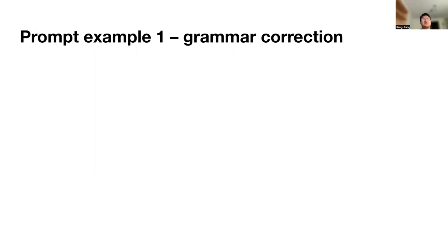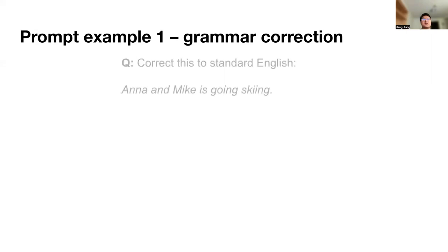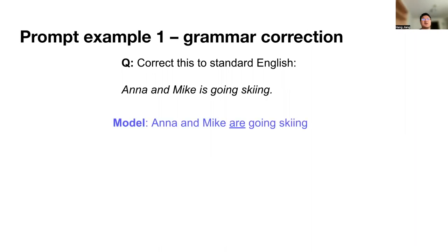As we know, language models are trained on millions of texts and are very good at grammar. So if we give it a sentence — 'Anna and Mike is going to skin' — we know it's grammatically incorrect. We ask it to correct this to standard English, and the model is able to do it very well.